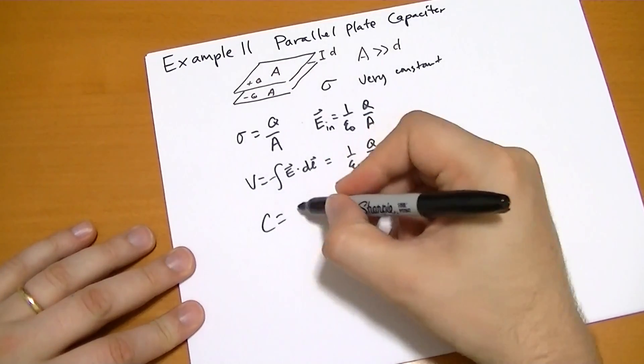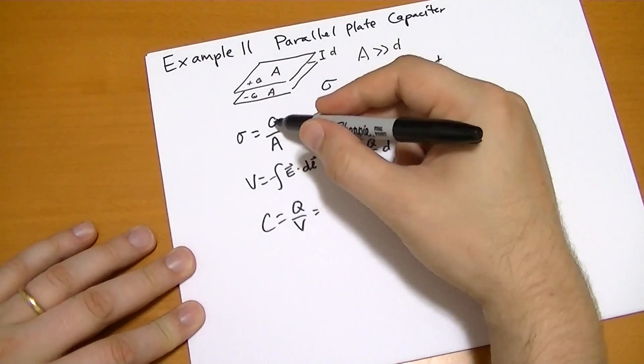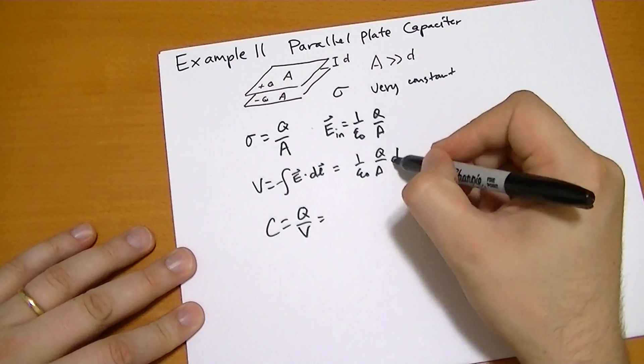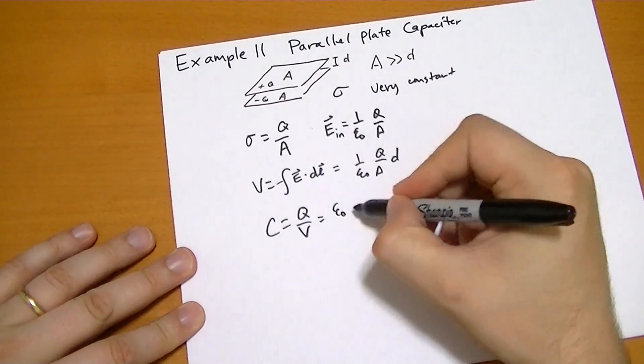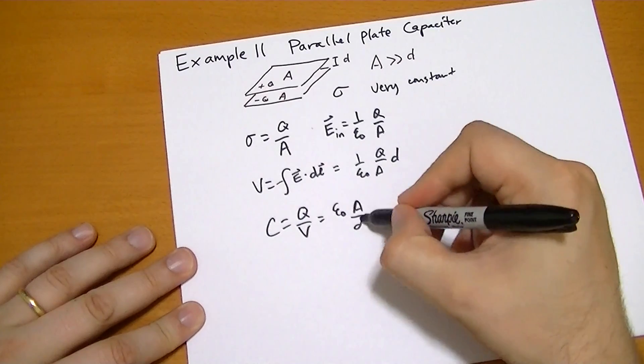So the capacitance is equal to the charge over the potential. Well, the charge is Q. The potential is Q over A times D. So we get an ε₀ at the top, we get an A at the top, and we get a D at the bottom.